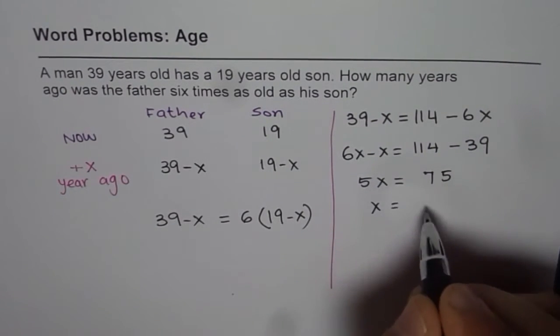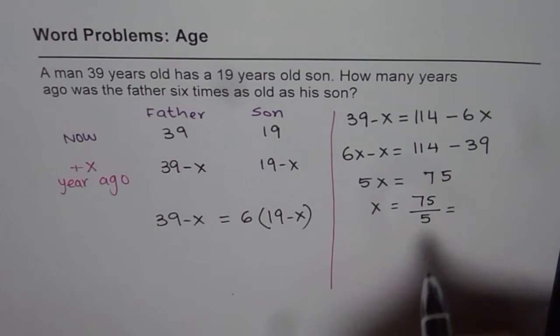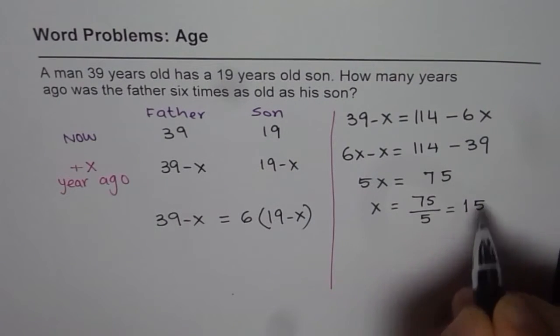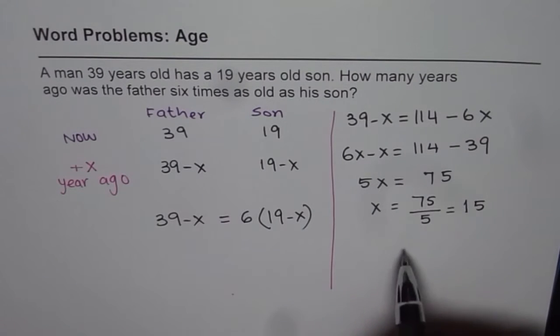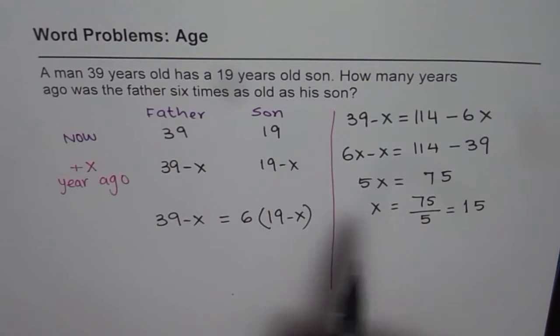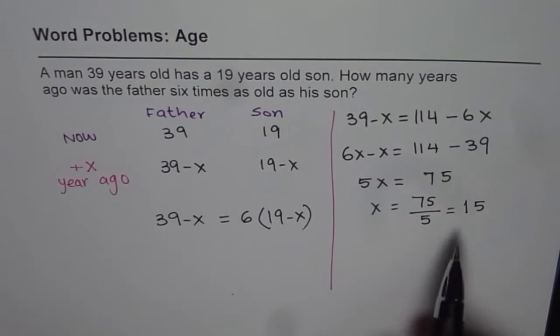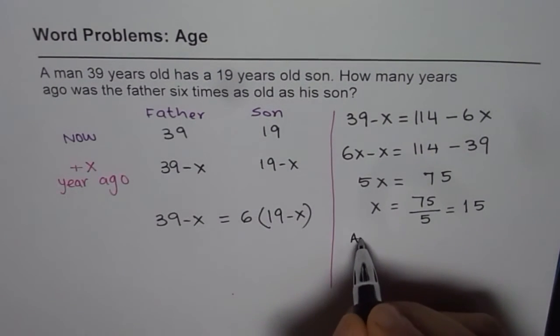X will be equal to 75 divided by 5. That gives us 5 times 1, and then 25, 5 times 5. So 15 years ago. So 15 years ago, father was 6 times the son. So the answer is 15 years ago.